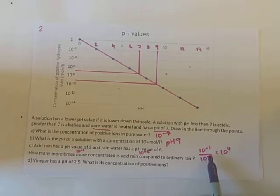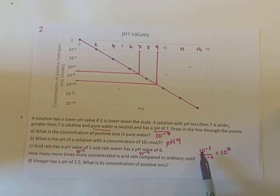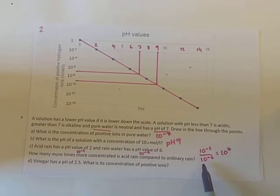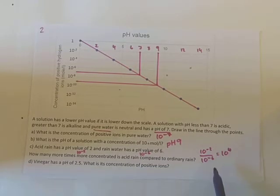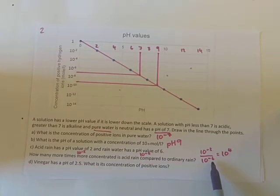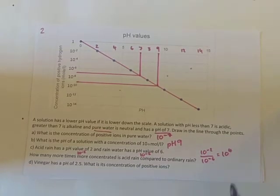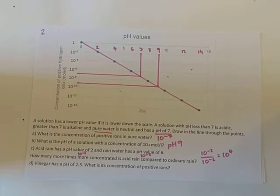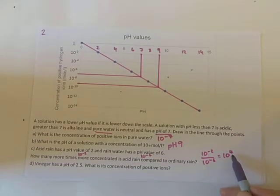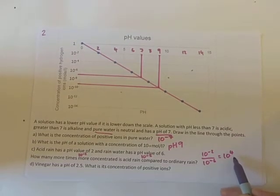Remember, when dividing numbers with the same base we subtract the powers. So negative 2 take away negative 6 gives us the power of 4.